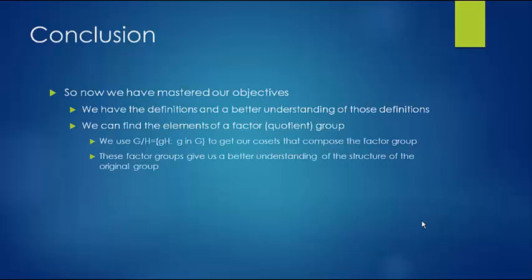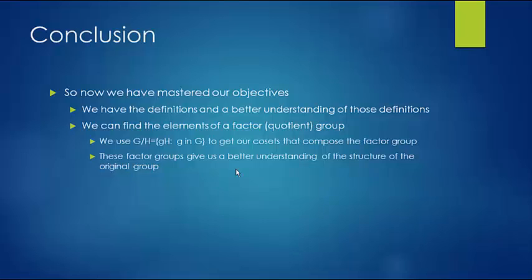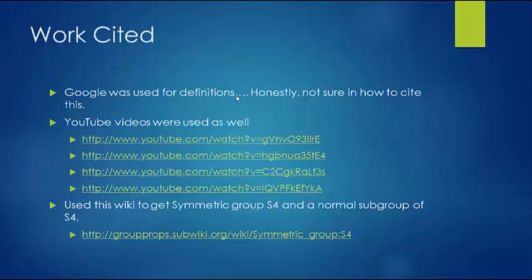To conclude: we've mastered our objectives. We worked with the definitions and have a better understanding of cosets and normal subgroups. We can now find the elements of a factor or quotient group — whichever name you prefer — using our definition to generate the cosets. Factor groups help us understand and reveal the structure of the original group. I've included some YouTube sources that may help if you still have questions. Thanks for listening, and have a good day!